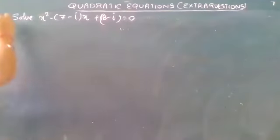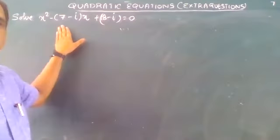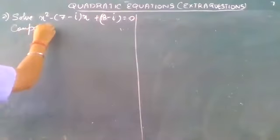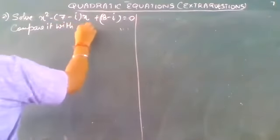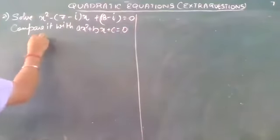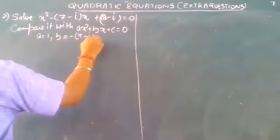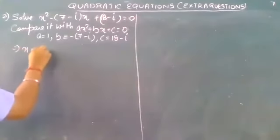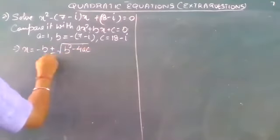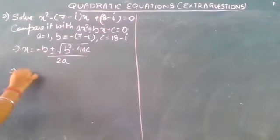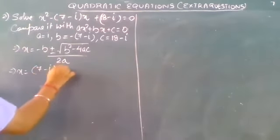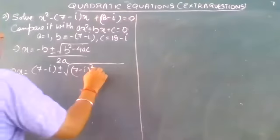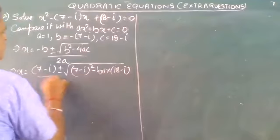Second extra question: solve x² - (7 - i)x + (18 - i) = 0. Comparing with x² + bx + c = 0: a = 1, b = -(7 - i), and c = (18 - i). Now applying the quadratic formula: x = [-b ± √(b² - 4ac)] / 2a, which gives x = (7 - i) ± √[(7 - i)² - 4·1·(18 - i)] / 2.